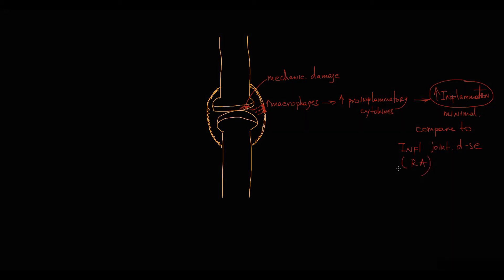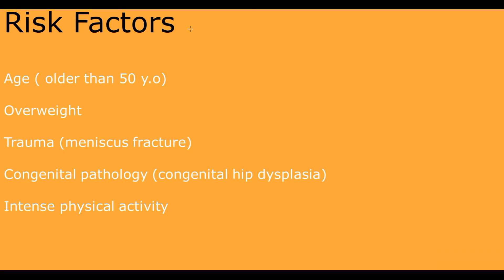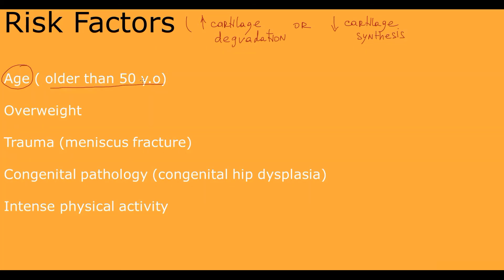The risk factors of osteoarthritis are factors that increase cartilage degradation or decrease cartilage synthesis. The most important risk factor is age — specifically older than 50. With age, overall regenerative function decreases, causing decreased cartilage regenerative capacity. The older a person is, the more pressure load their cartilage has suffered through life.